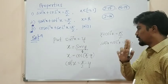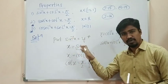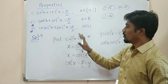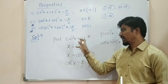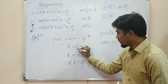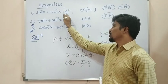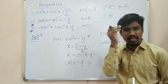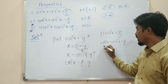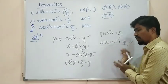Very simple, only two steps. The first step: put sin inverse x equal to y. Otherwise, you can take cos inverse x equal to y, substitute, and use the inverse to normal function conversion. The answer is cos(π/2 − y), giving π/2 equal to π/2. So the result is sin inverse x plus cos inverse x is equal to π/2. Very, very simple.